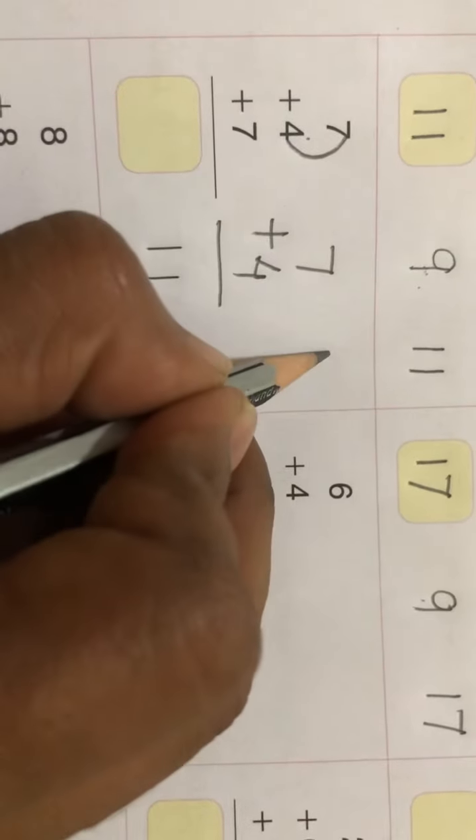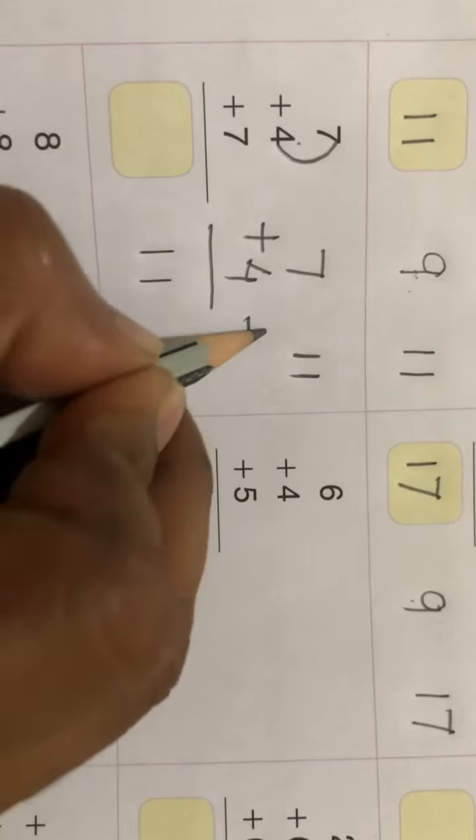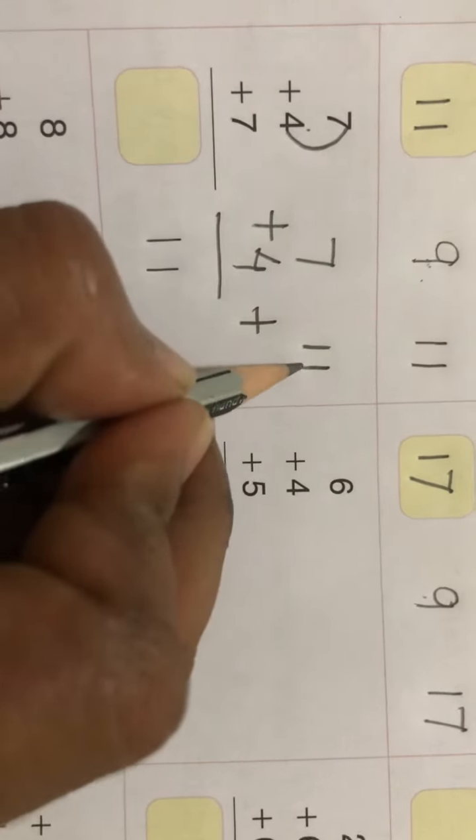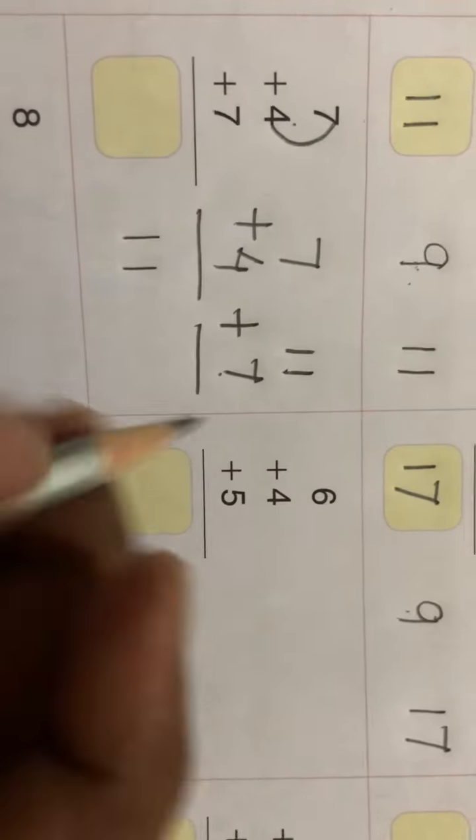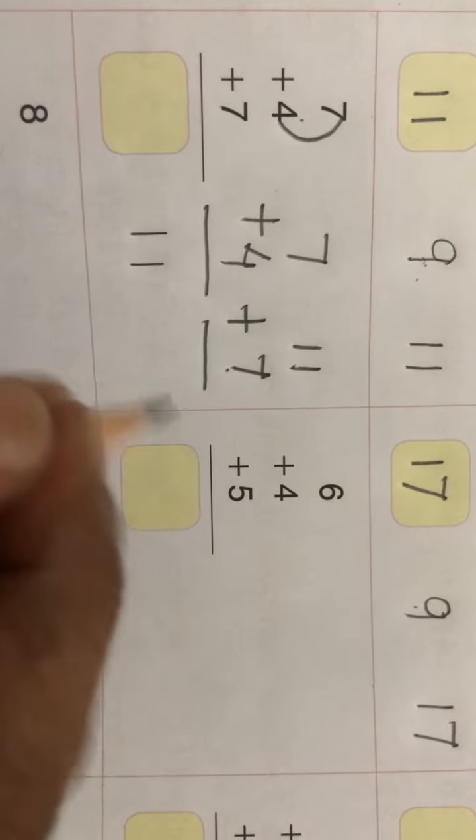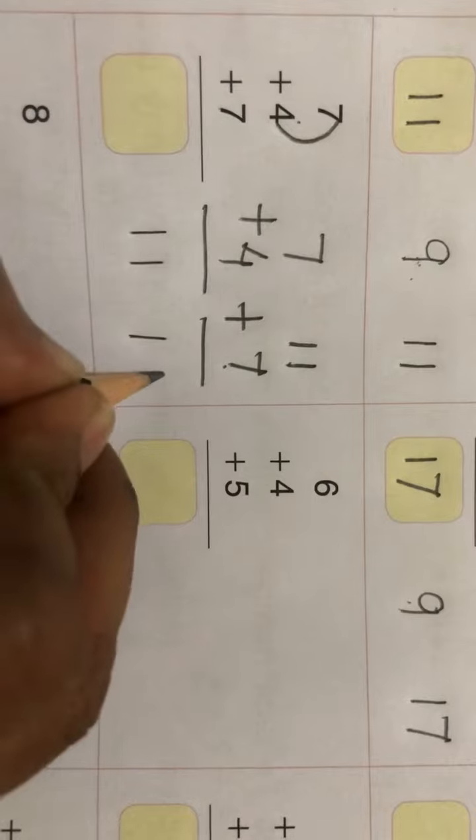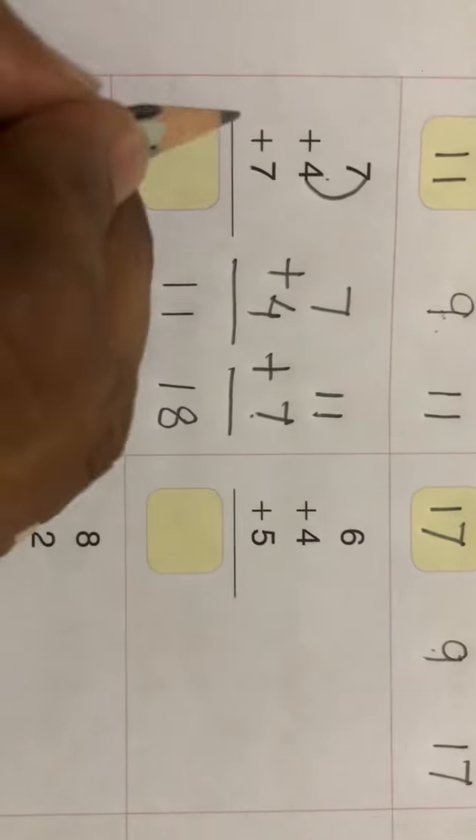Add the next addend, 7, below. So 7, 11 plus 7. After 11, if 7 numbers go ahead, you will get answer 18. 18, write it here. 18, okay.